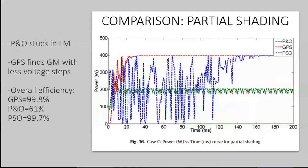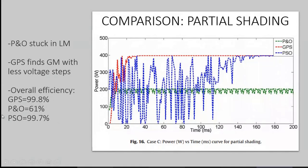In the partial shading case, it is evident that P&O is stuck in local minima, with clearly visible oscillations. The PSO method takes very long to converge. GPS may take slightly longer initially, but then rapidly converges towards the global maxima. Comparing overall efficiencies: GPS is 99.8% efficient; P&O, due to oscillations causing voltage loss, is only 61% efficient; and while PSO is also efficient, its high computation time makes it less preferred. GPS is better overall.